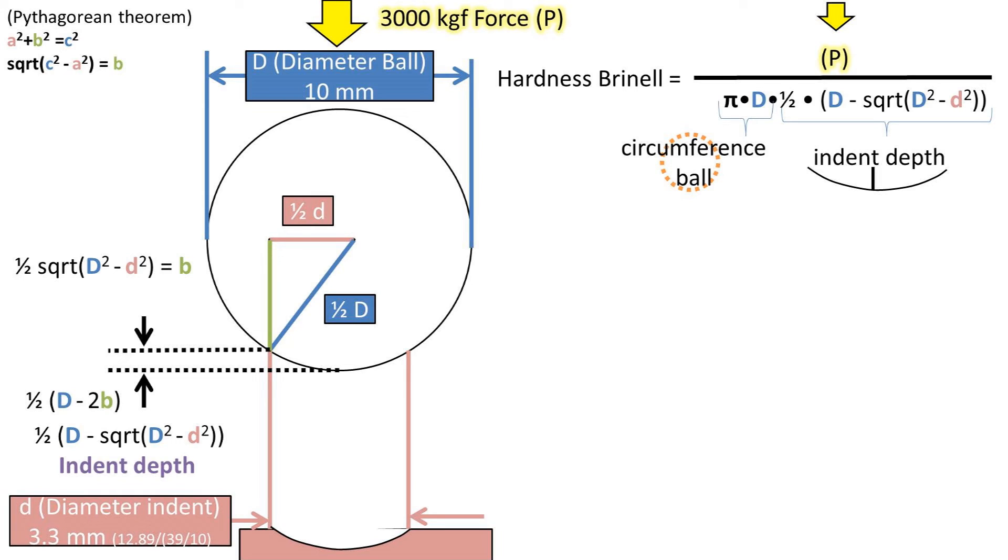So really the formula is load divided by the circumference of the indent sphere times the depth of the indent.